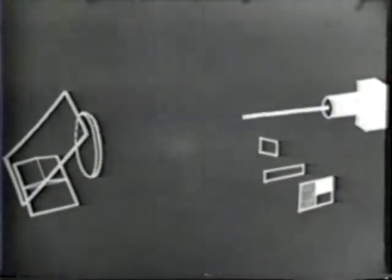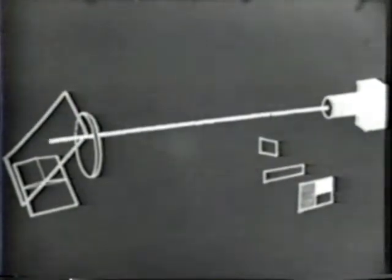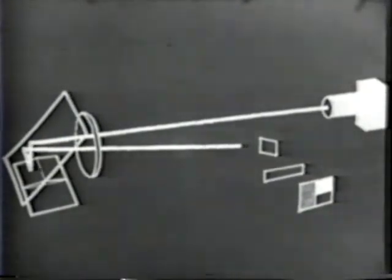Ray number three is reflected from an area inclined in the opposite direction and is completely blocked by the knife edge. Thus no light reaches the camera and an area of shadow is seen on the ground glass.